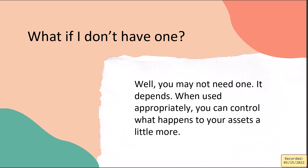An asset protection trust in Washington might be called a credit shelter trust or bypass trust. Washington's estate tax threshold is $2,193,000 — if your estate exceeds that, estate taxes may be imposed. You might want to decrease your estate's size by leaving part of your money in a bypass trust for a spouse or kids, essentially bypassing estate taxes. There's also the QTIP — Qualified Terminable Interest Property — trust, which lets you leave money specifically for your spouse and can be more flexible and beneficial for taxes.